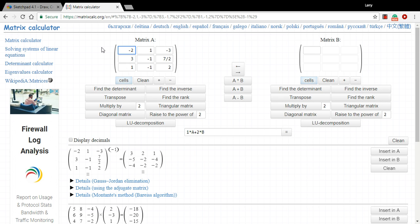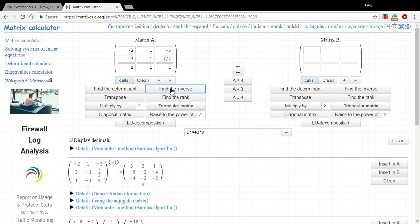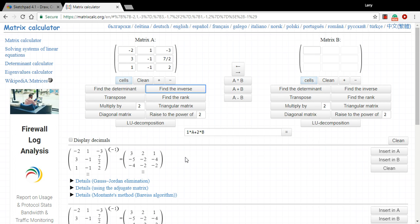And this online calculator allows us to do a lot of different things. I'm just going to click find the inverse. Okay. So that's got our inverse. That's this guy right there. And then it's got this button here that says insert in A. So I can take this inverse and replace matrix A with it. So I'm going to do that.